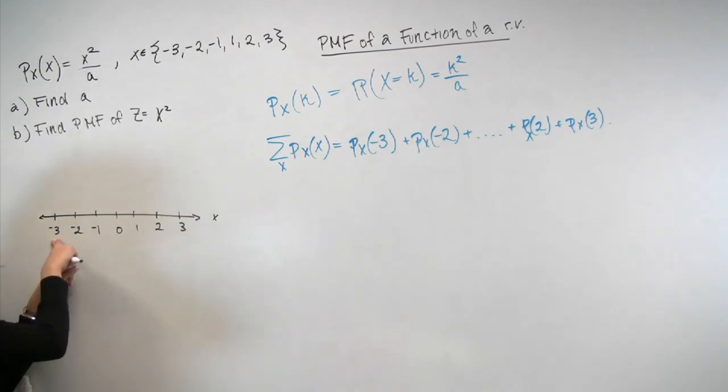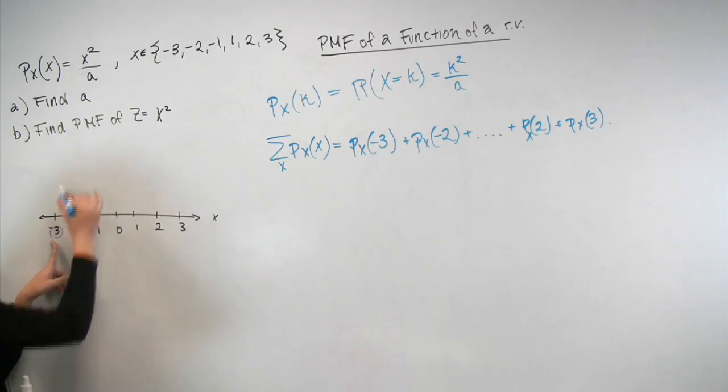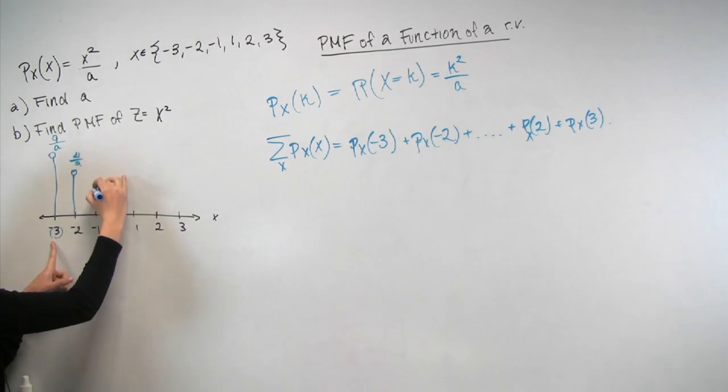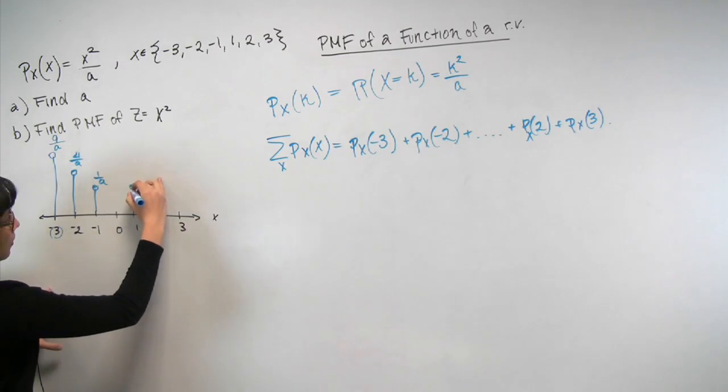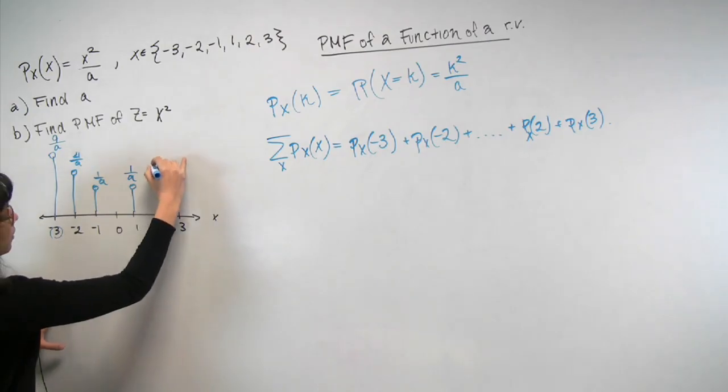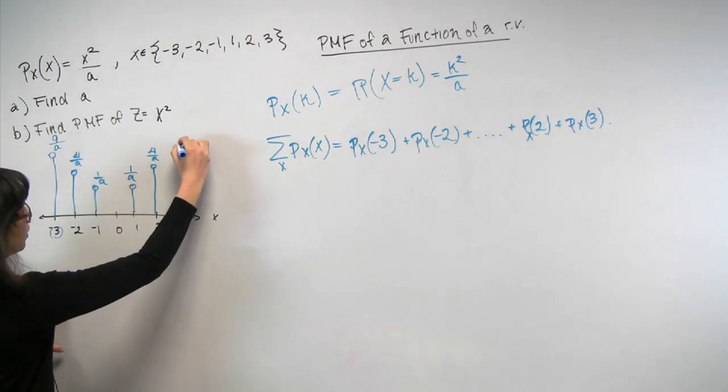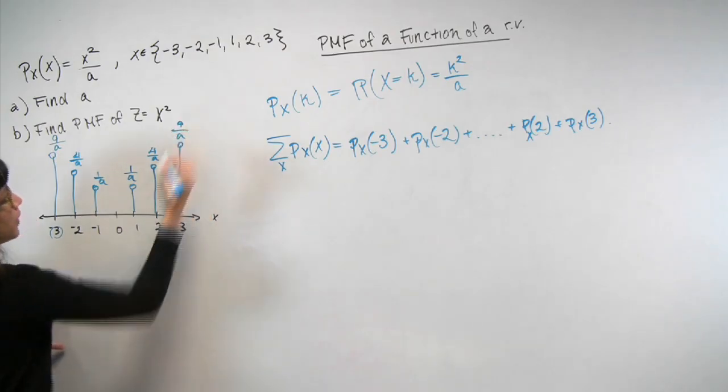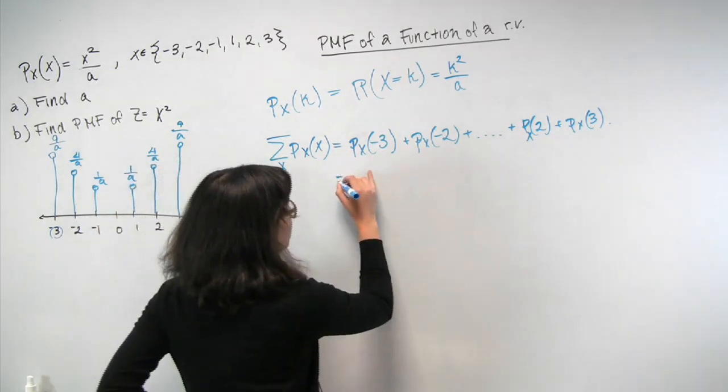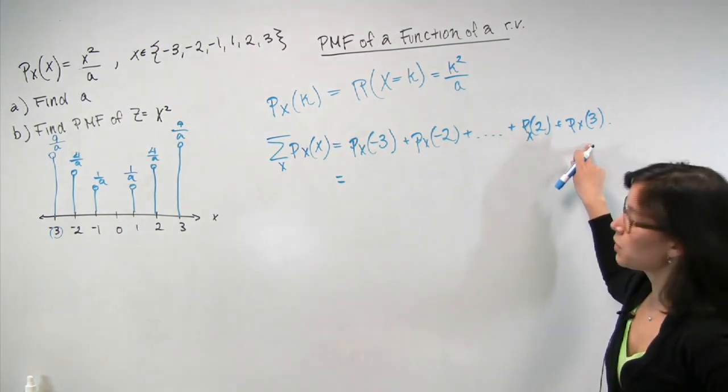So the amount of probability mass lying over minus 3, the way we figure that out, is we take minus 3 and we plug it into this formula up here. So you get 9 over a. Now, you can do this for minus 2. You get 4 over a, looking at the formula. For 1, you get 1 over a. And of course, this graph, it's the mirror image over 0 because of the symmetry. So hopefully, this little visualization helps you understand what I'm talking about. And now, we can just read these values off of the plot we just made.